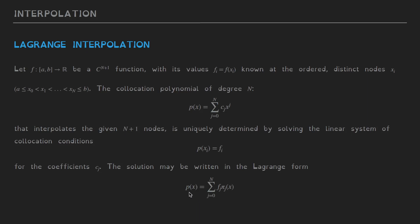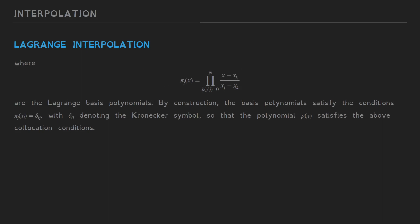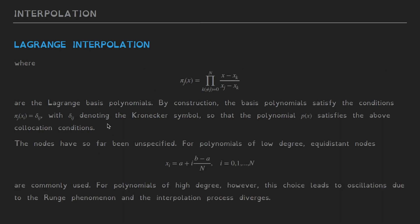By construction, these polynomials satisfy the conditions pj of xi equals delta ij, where delta ij is the Kronecker delta. You can check that this condition guarantees that the polynomial p of x satisfies the collocation conditions p of xi equals fi. This is because if I substitute x equals xi, I have pj of xi, which is delta ij. Contracting delta ij with fj means that only the term fi survives, so p of xi equals fi and the collocation conditions are automatically satisfied.